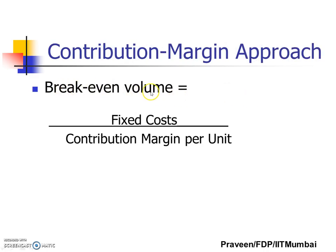Breakeven volume with the help of contribution margin is fixed cost divided by contribution margin per unit. So we have fixed cost, variable cost, and selling price. Fixed cost divided by contribution margin per unit — that is selling price minus variable cost — gives us the breakeven volume.